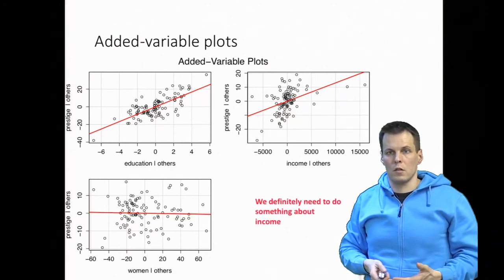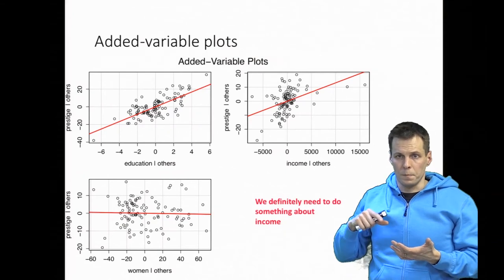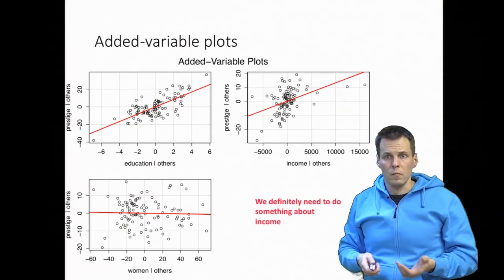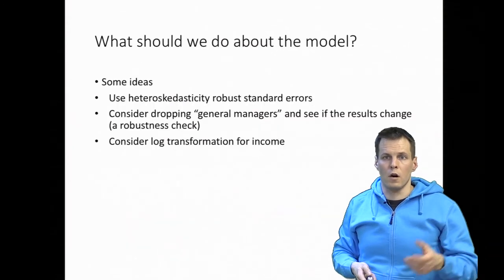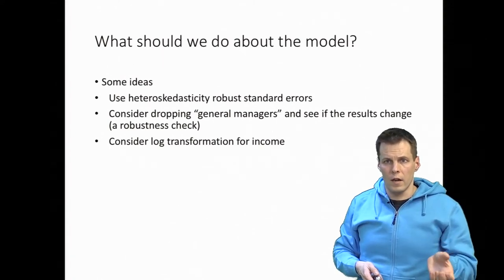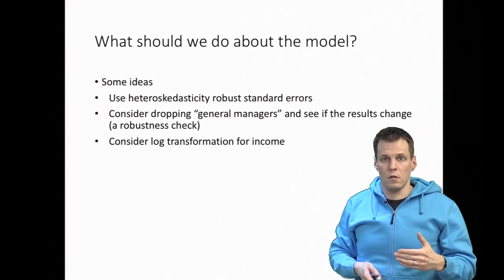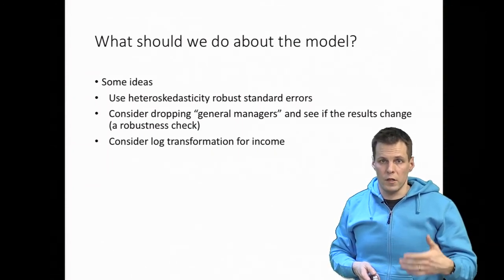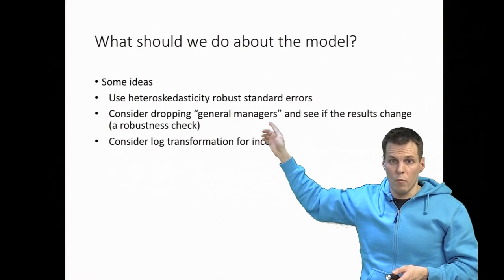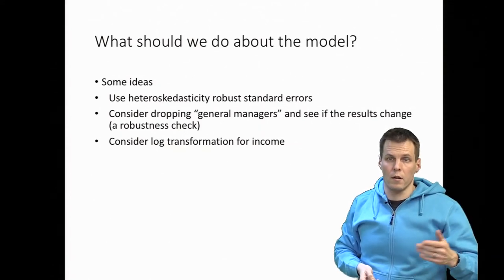Now we have done the diagnostics: the normal QQ plot, the residual versus fitted plot, the influence or outlier plot, and the added variable plot. Now we have to decide what to do with the model. Some ideas: we could use heteroscedasticity-robust standard errors, but our sample size is small and there is no clear evidence of a serious heteroscedasticity problem, so I would probably use conventional standard errors. We could consider dropping general managers and see if the results change — even if we keep them, that could work as a robustness check. In the DeepHouse paper they estimated the same model with and without the outlier observation and compared results.